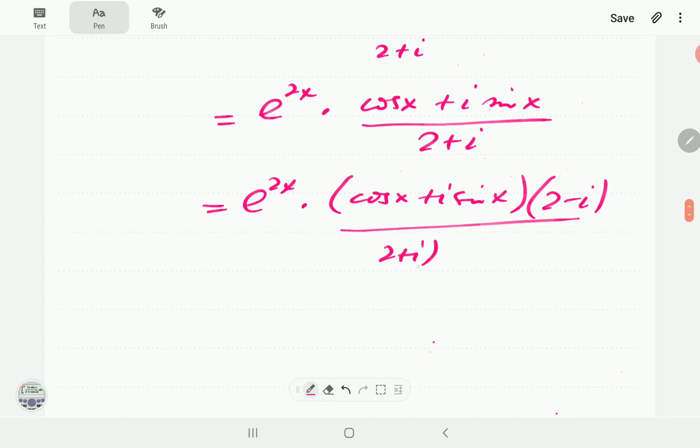In the denominator, we're going to have 2 plus i times 2 minus i.